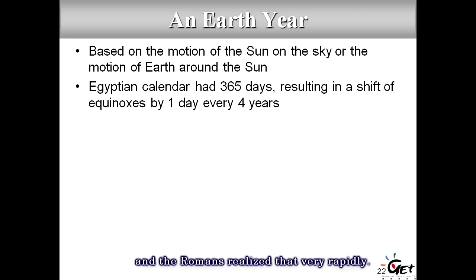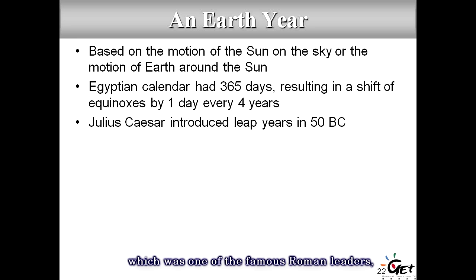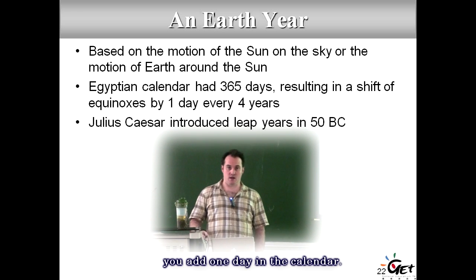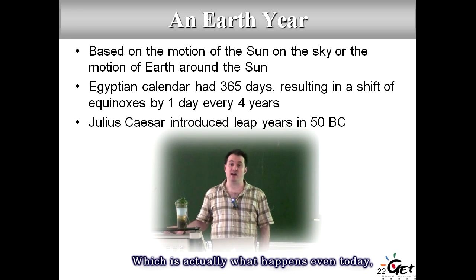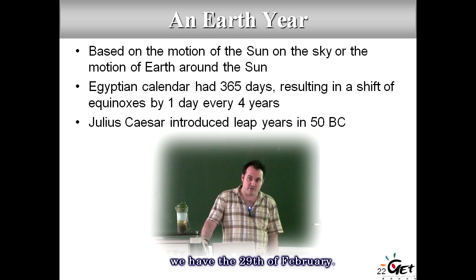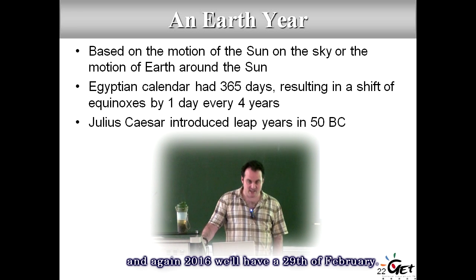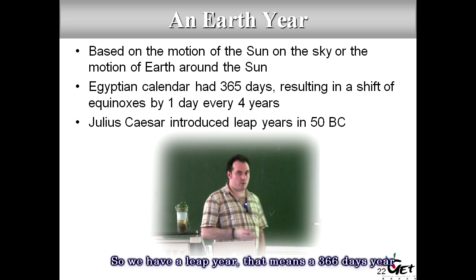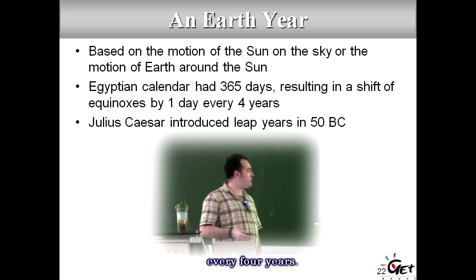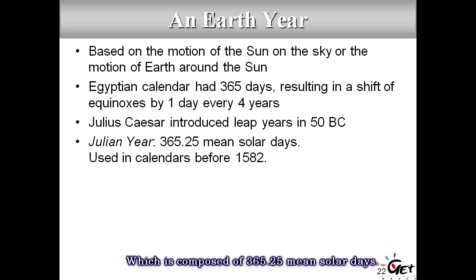The Greeks and Romans realized this rapidly. Julius Caesar introduced leap years around 50 BC — every four years you add one day to the calendar. This still happens today: every four years we have a February 29th — for instance 2012 and 2016 were leap years. This is called the Julian year, which averages 365.25 days.